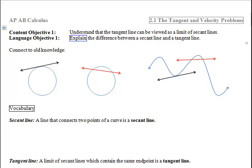Before we get to that objective, I want to remind you of your old knowledge from geometry. In your geometry course, you were taught secant lines and tangent lines in the context of circles. Here you can see that we have a tangent line that touched the curve at one point and a secant line which touched the curve at two points.